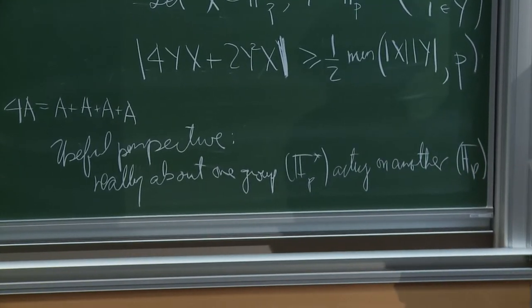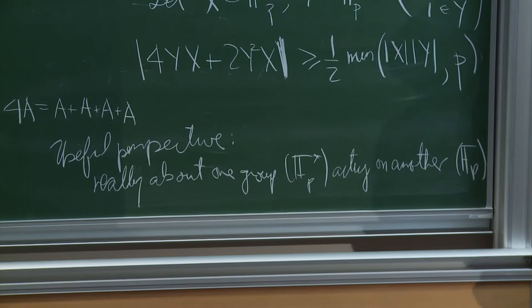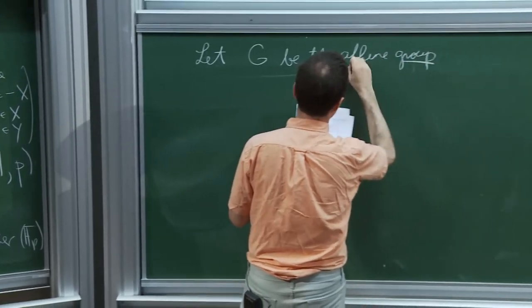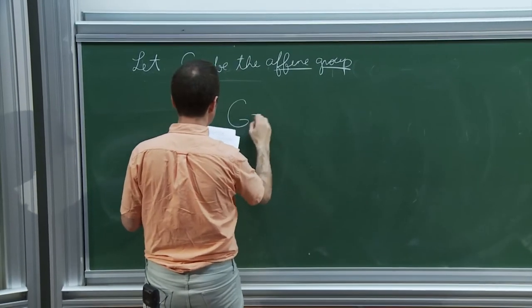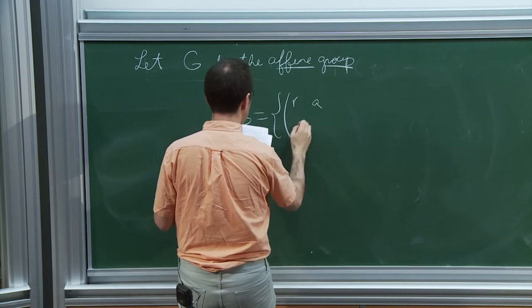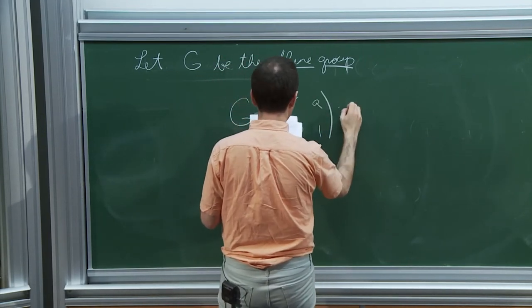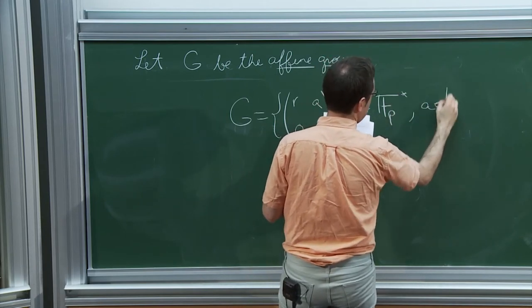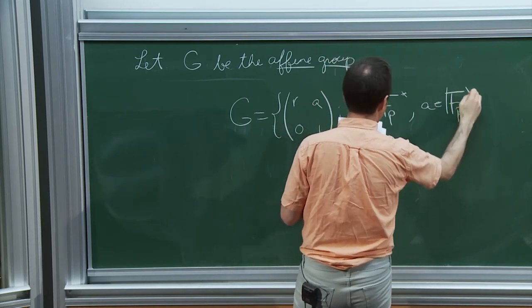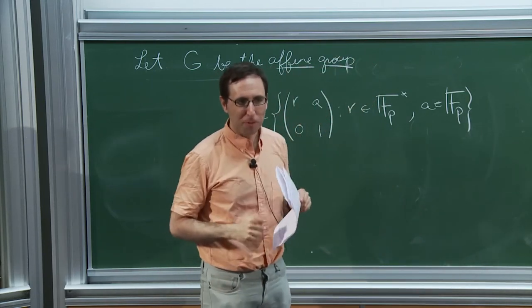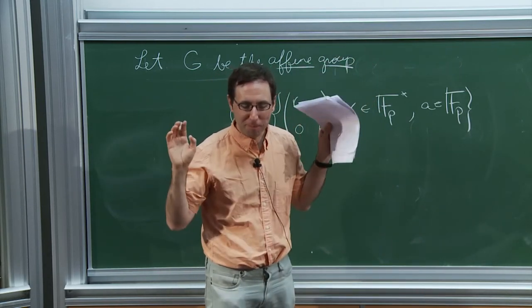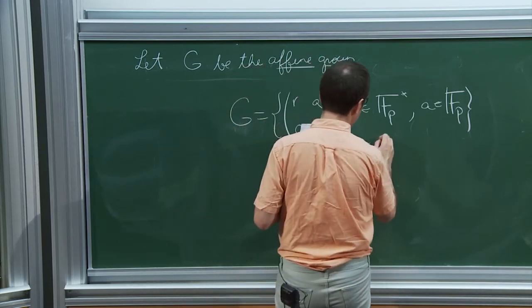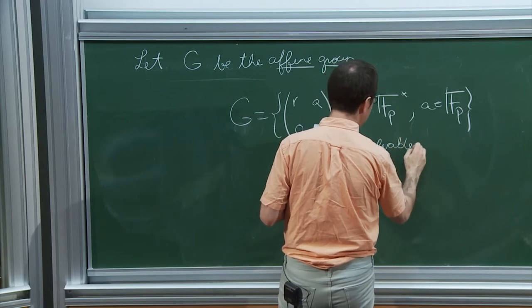Let's give the affine group over Fp. It's a group of transformations on the line — you can write it as matrices. It's a very nice example; I'm always forced to look for a substitute for 'simple' when talking about a non-simple group. It's a solvable group, a very nice small example of a solvable group.